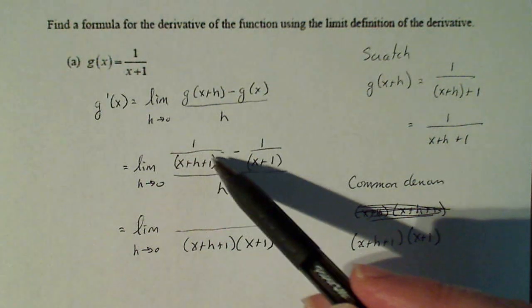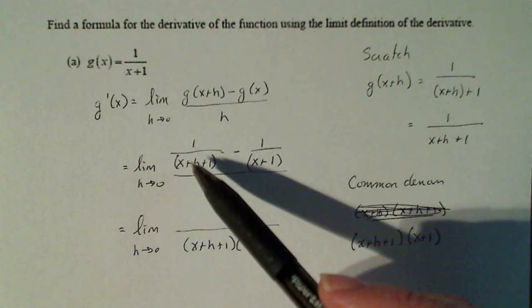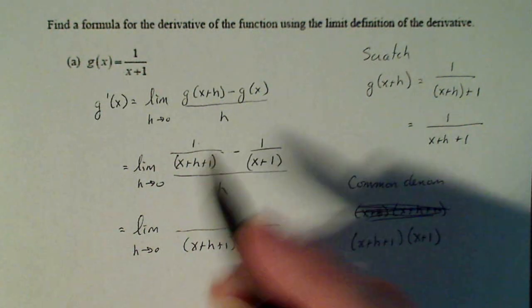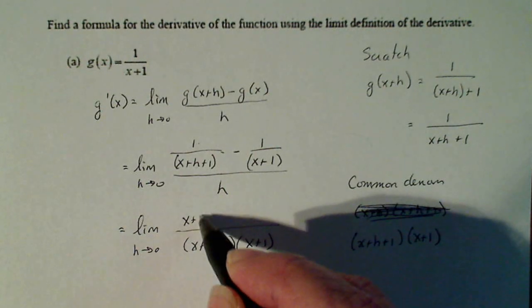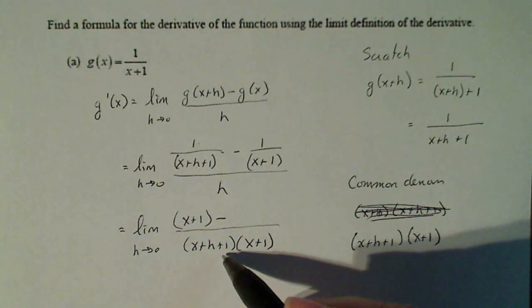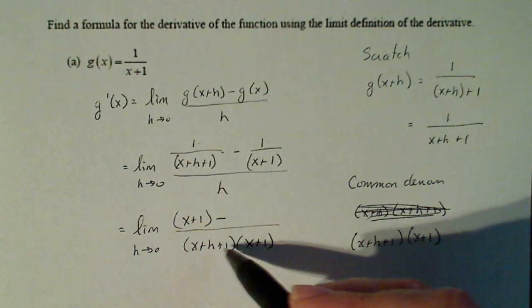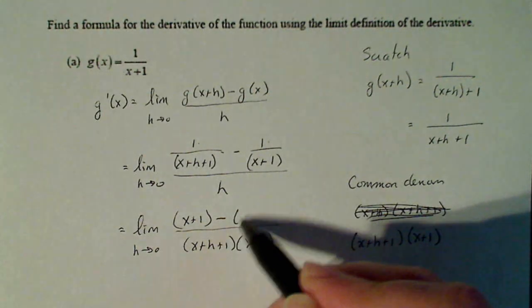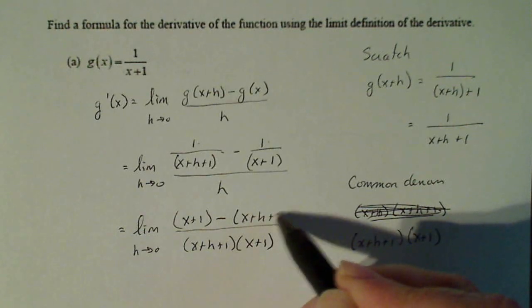So when I look at this denominator, I notice that it's missing an (x+1). So I have to multiply the top and bottom by (x+1). Here the denominator is missing (x+h+1). So I have to multiply top and bottom by that. So it's going to be 1 times (x+h+1).